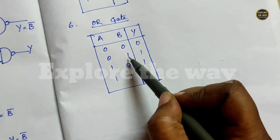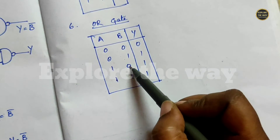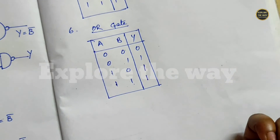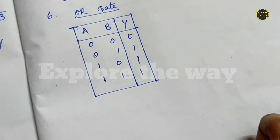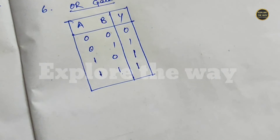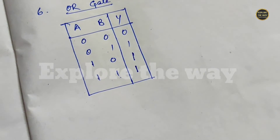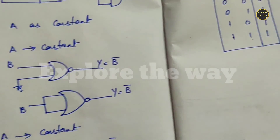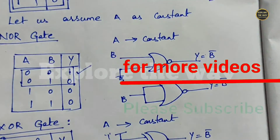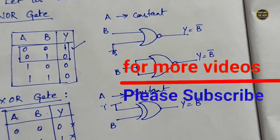Similarly, the OR gate. Again, one input is constant. When A is 0, output is the same as the second input; when A is equal to 1, output is 1 irrespective of the second input. So we cannot derive inverter functionality from the OR gate either. We can get inverter functionality from NAND gate, NOR gate, XOR, and XNOR gates.